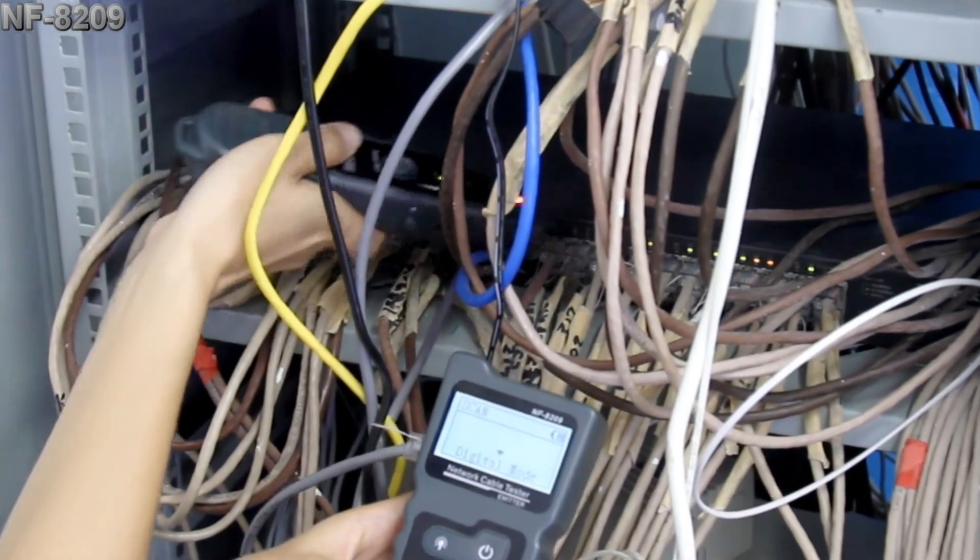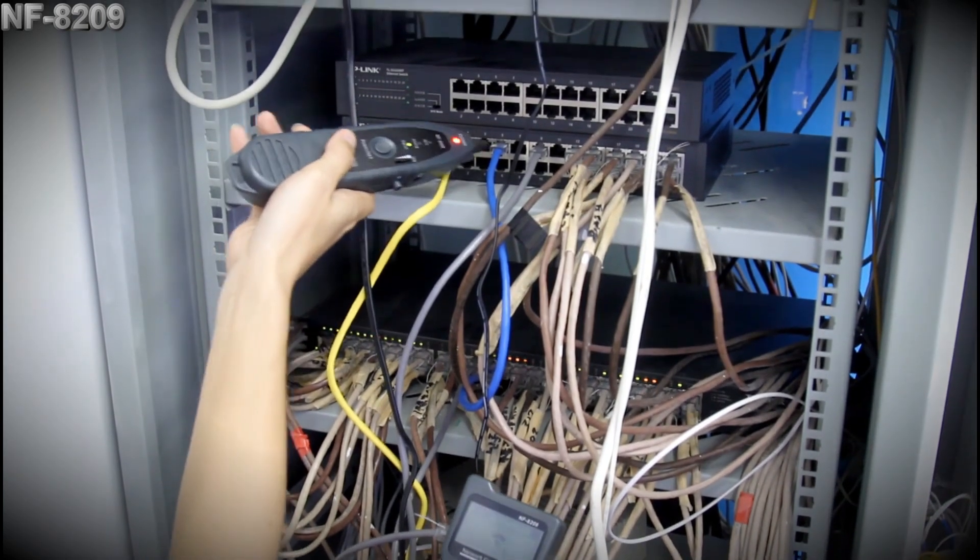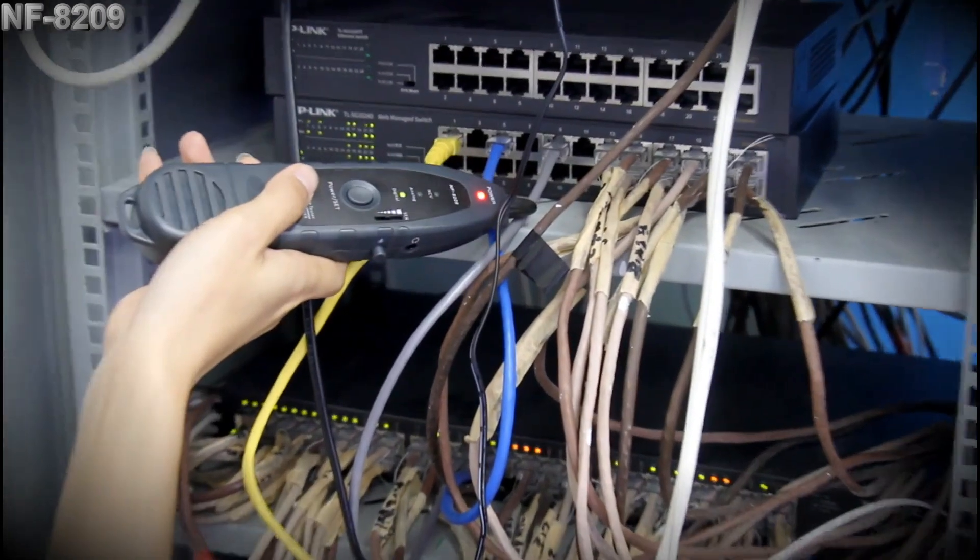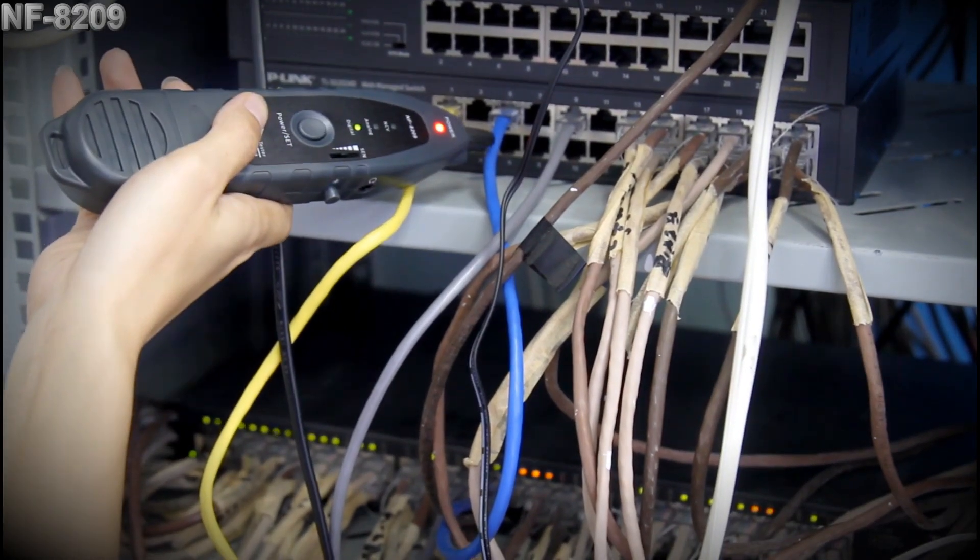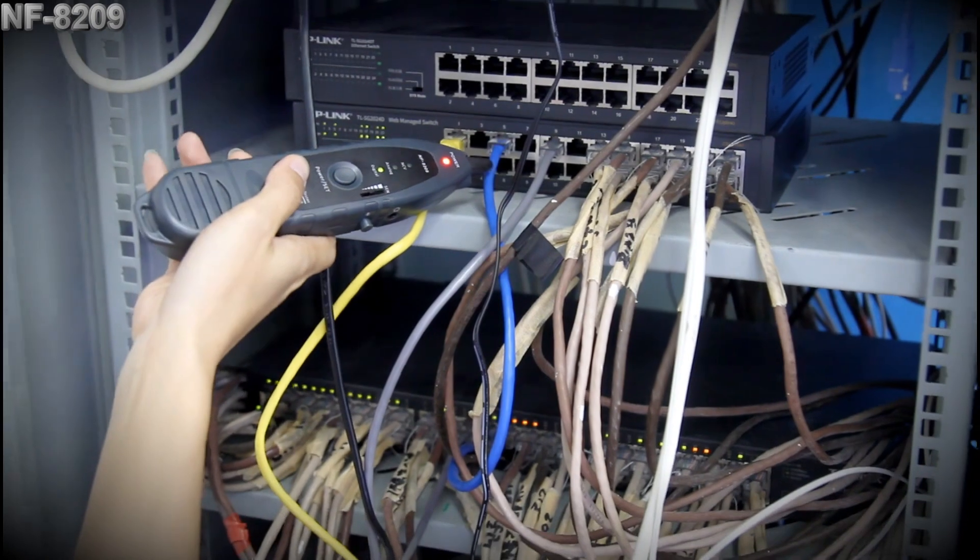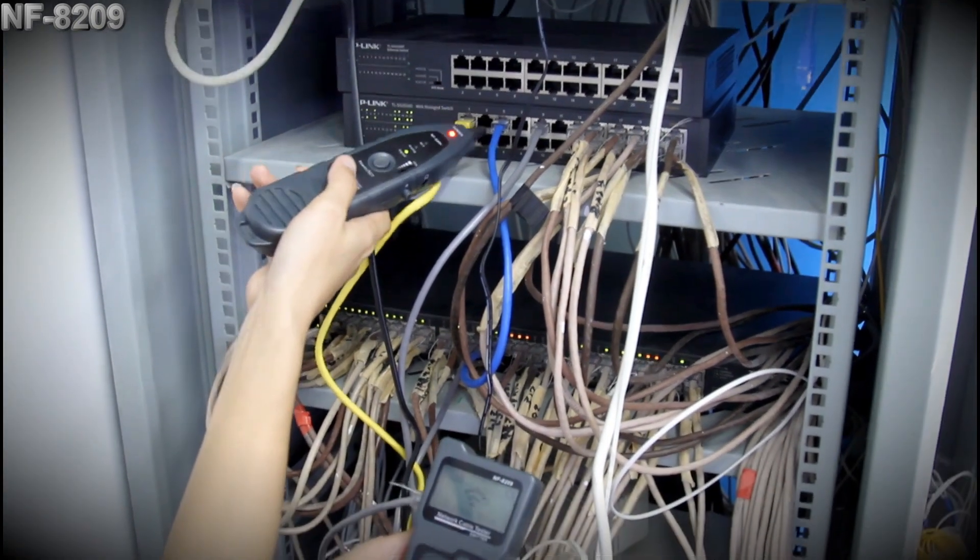We can hear no sound here, so that means the target cable is not here. Now, the grid cable is the target one. Even though the blue one is close, there's no sound. It can target the cable accurately.